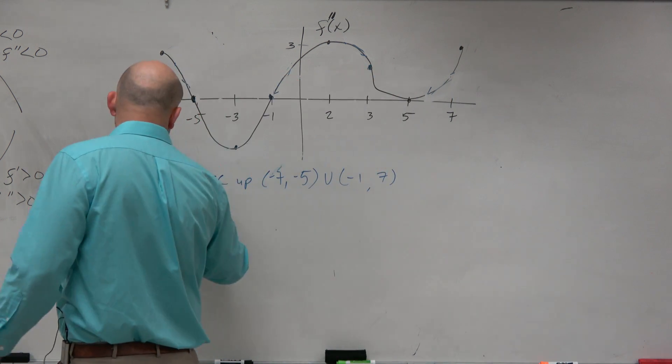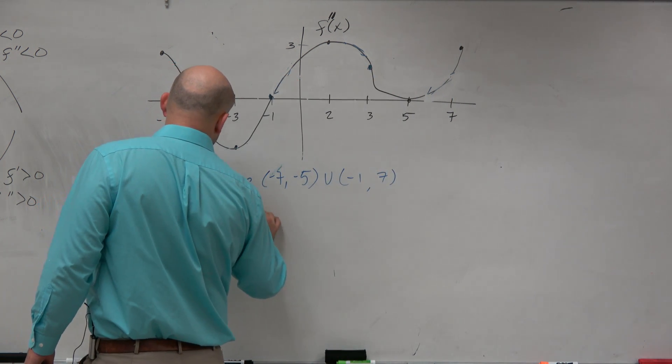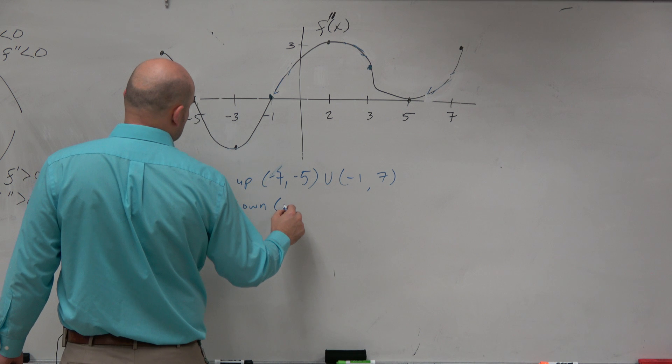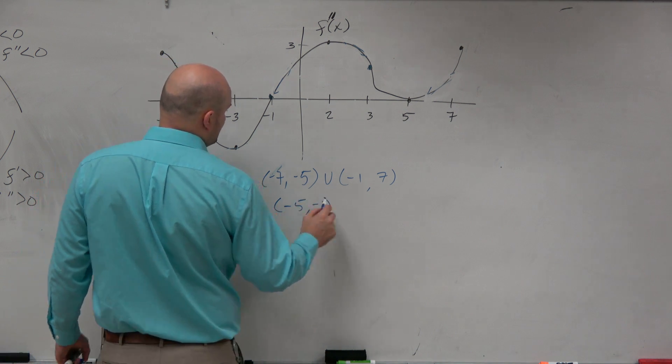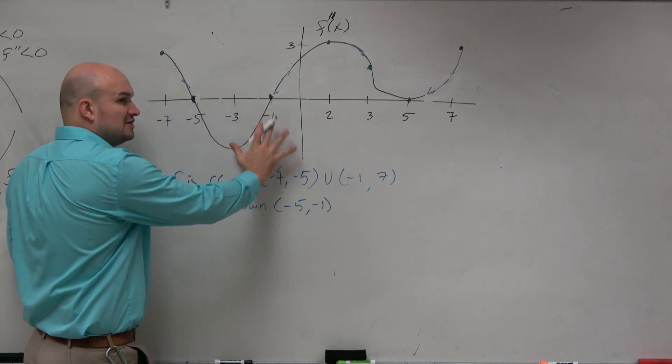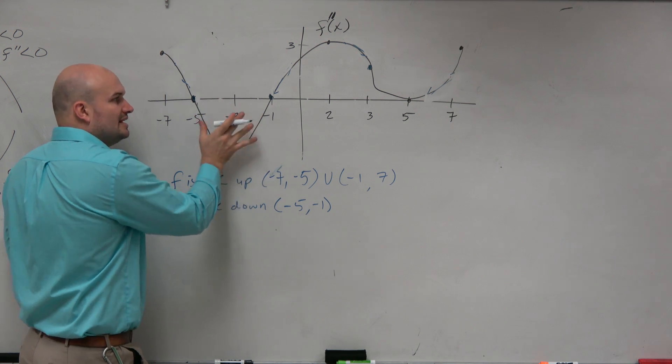And we could say f is concave down on the intervals negative 5 to negative 1, because these values of the second derivative are below the x-axis. They're negative.